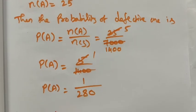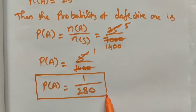Therefore the probability of defective item is 1 out of 280. Thank you students.